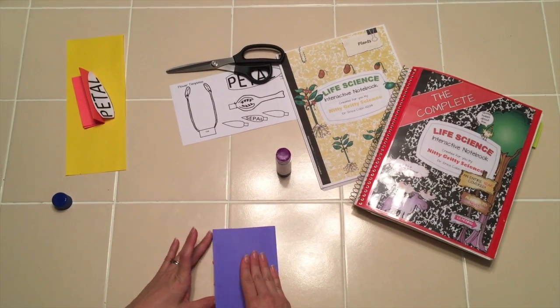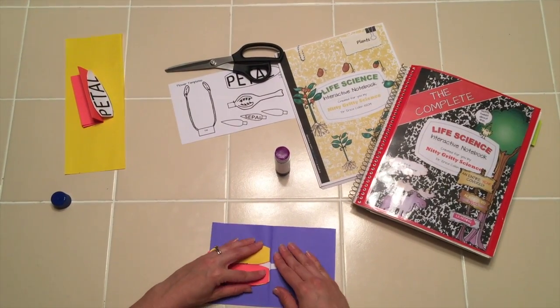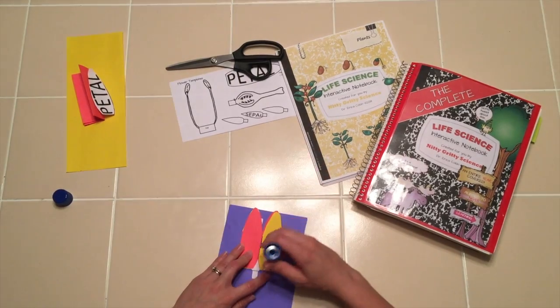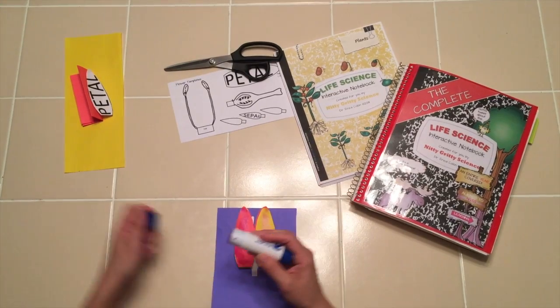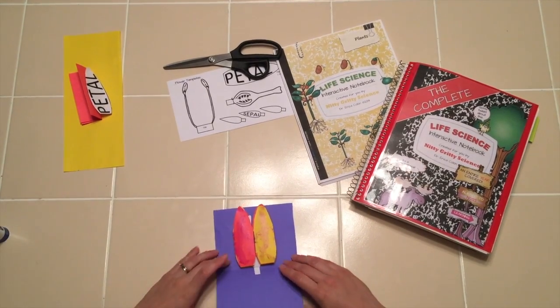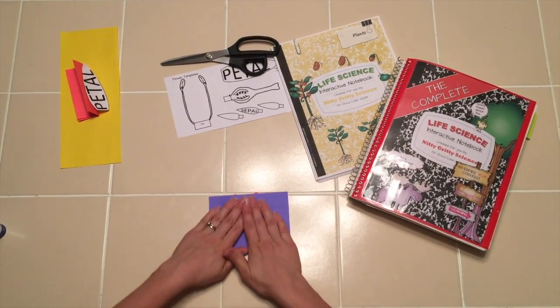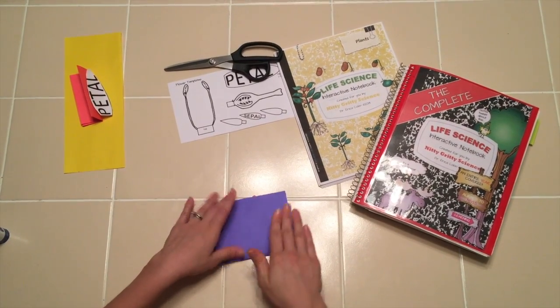Now take your card over and do the same thing on the other side, having the flower petals right on the crease of that card. Again, fold the card. Press firmly so it all stays.